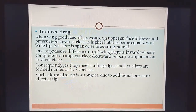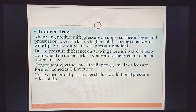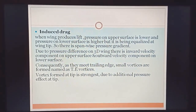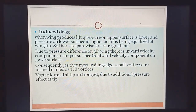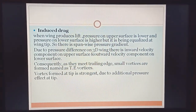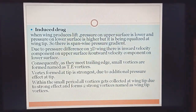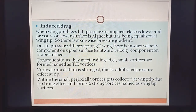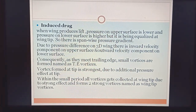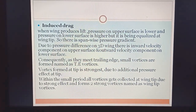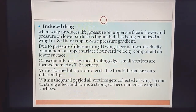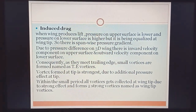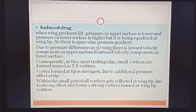As these trailing edge vortices collect, they tend to move toward the wing tip. As they move there, a stronger vortex begins to form. Within a small period, all vortices get collected at the wing tip due to the strong effect and form two strong vortices named as wing tip vortices.